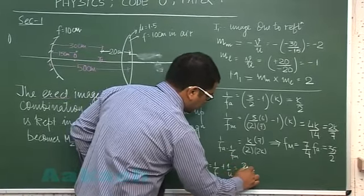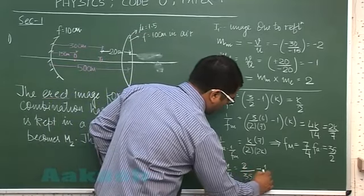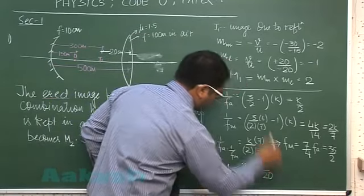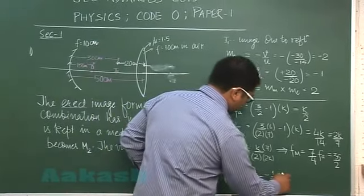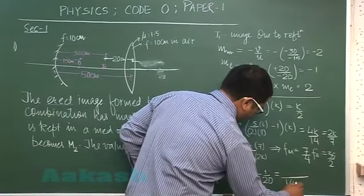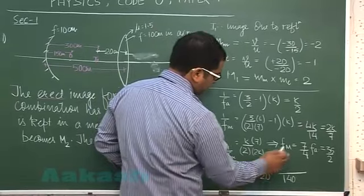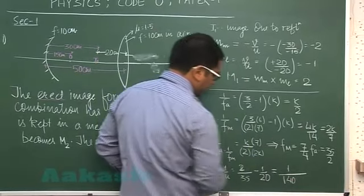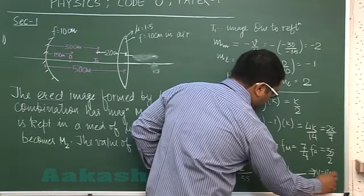This comes out to be (8-7)/140, so that would be 1/140. In other words, this implies V = 140.